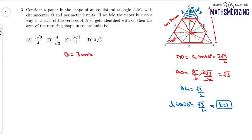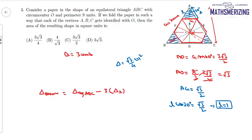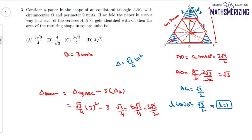The area of each small blue equilateral triangle is √3/4 × 1² = √3/4, and there are three such triangles. The area of the resulting figure equals the area of the original equilateral triangle ABC minus 3 times the area of these small triangles: (√3/4 × 3²) − 3 × (√3/4) = 9√3/4 − 3√3/4 = 6√3/4 = 3√3/2 square units. That is option C.